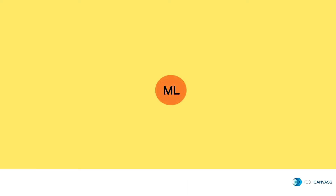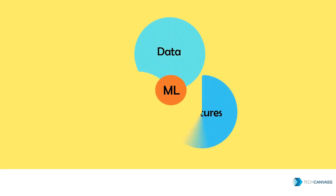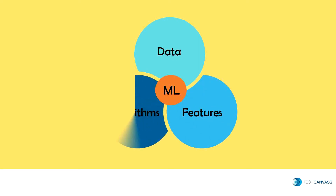So machine learning is at the intersection of data, features like size, shape, color, and the algorithm that is used.